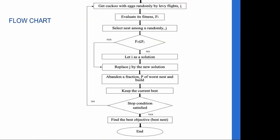In the flowchart: start by initializing a population of N host nests X_i. Get a cuckoo randomly via Levy flight and evaluate its fitness F_i. Select a nest J among N randomly. If F_i is less than or equal to F_j, replace J by the new solution; otherwise keep I as the solution. Then abandon a fraction P_a of nests and build new ones. Keep the current best. If the stop condition is satisfied, find the best objective function or best nest and end.